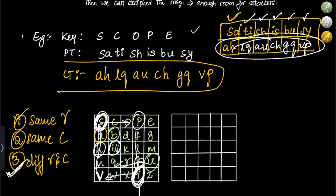So the full cipher text obtained is: AH LQ AU CH GQ VP. This was about the Playfair cipher. Next, let us look into the Hill cipher.